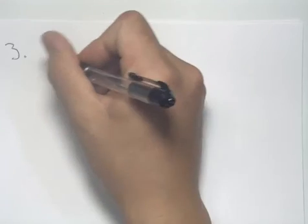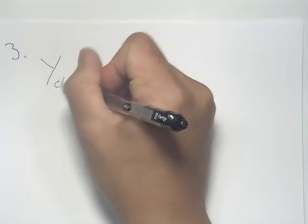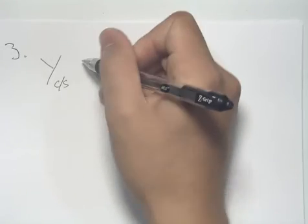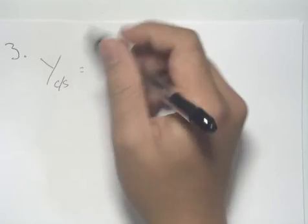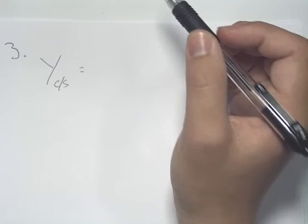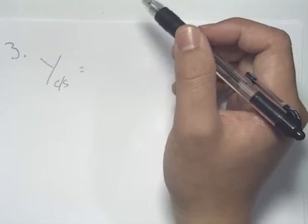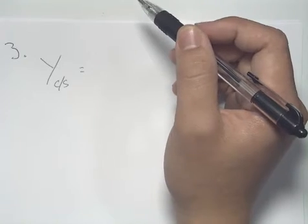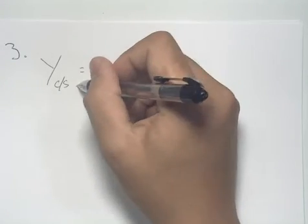We can write our yield Y with subscript cells over substrate. This equals the change in cell concentration over the change in substrate concentration, hence cells over substrate.